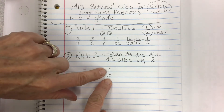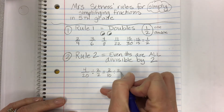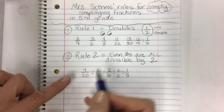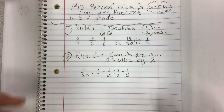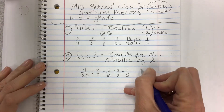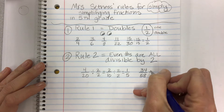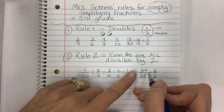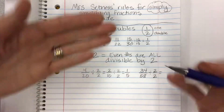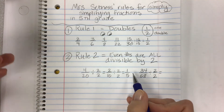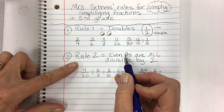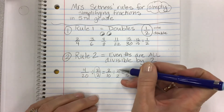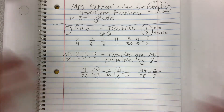What dividing by two does for younger students is it takes big numbers they may not know a factor for and gets them down to something smaller — and they start to recognize what's divisible. Then they say, I can divide again: two divided by two is one, and ten divided by two is five. Even something like thirty-four fifty-eighths or twenty-six eighty-seconds — if both are even, they're divisible by two, so start there.